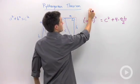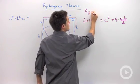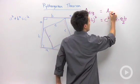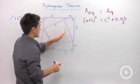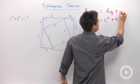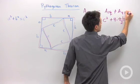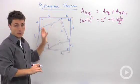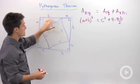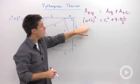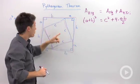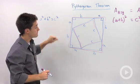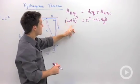So to step back: the area of the big square has to equal the area of the small square — the one with side c — plus the area of the four triangles. The big square equals the sum of its parts. If we clean this up, we should end up with the Pythagorean theorem: a squared plus b squared equals c squared.